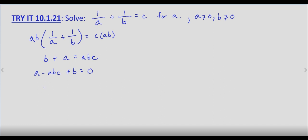Subtract b from both sides. We get a minus abc equals negative b.